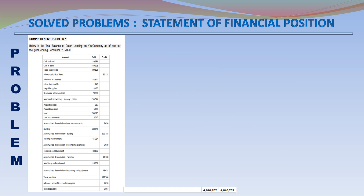Problem: Below is the trial balance of Crash Landing on U Company as of and for the year ending 31 December 2020. Account — Debit/Credit: Cash on Hand (Debit) 120,586; Cash in Bank (Debit) 560,125; Trade Receivables (Debit) 4,125; Allowance for Bad Debts (Credit) 60,128.